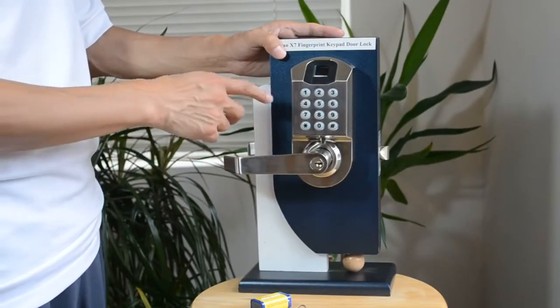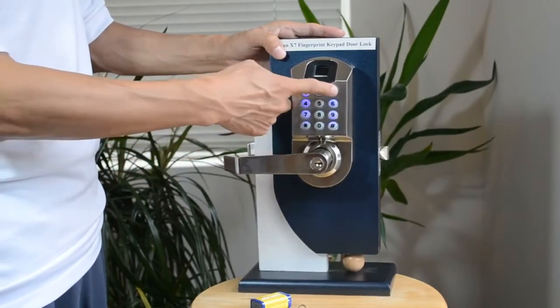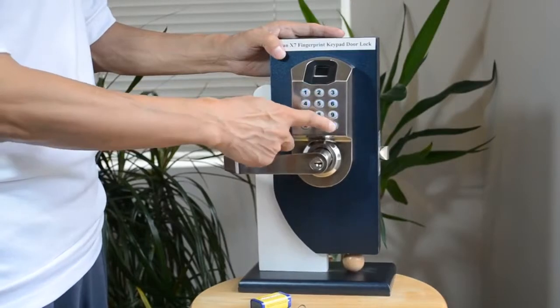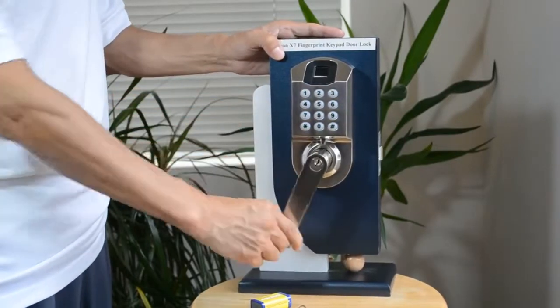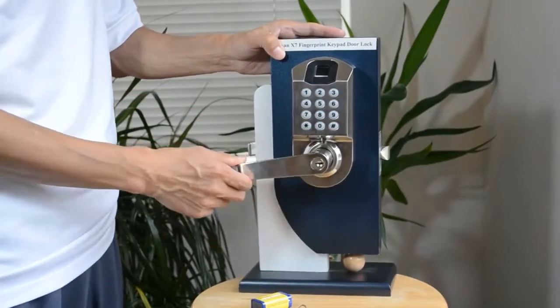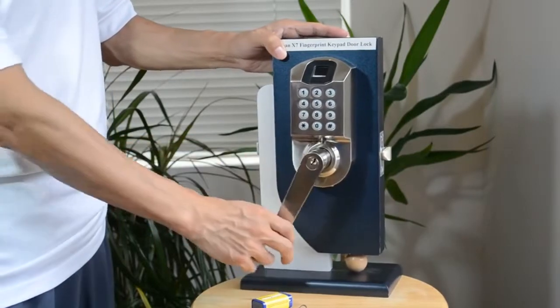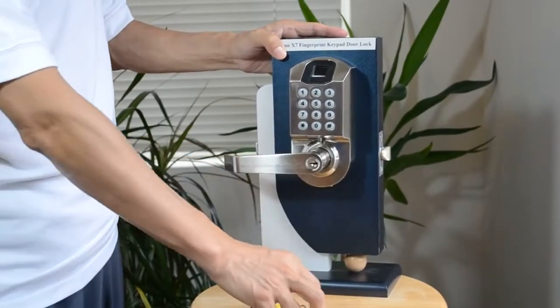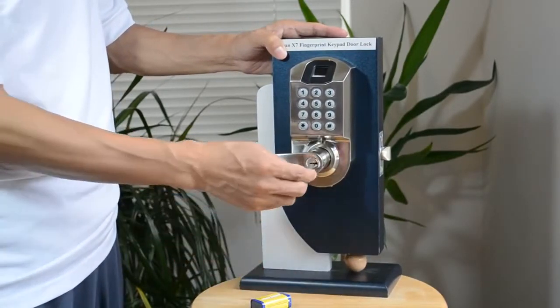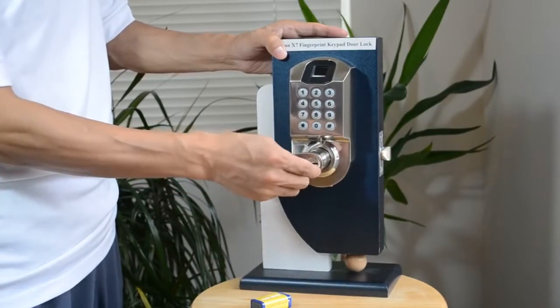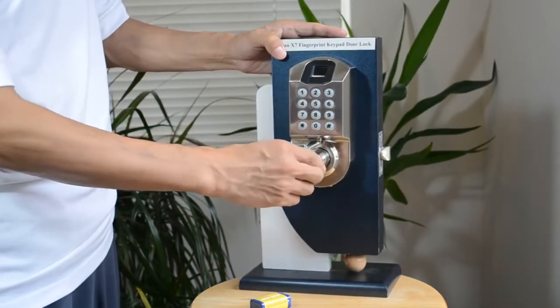The second way is to use the keypad, then the lock will unlock. It will be relocked after five seconds. The third way is to use a key. Just put it in, turn 180 degrees, and it will unlock.